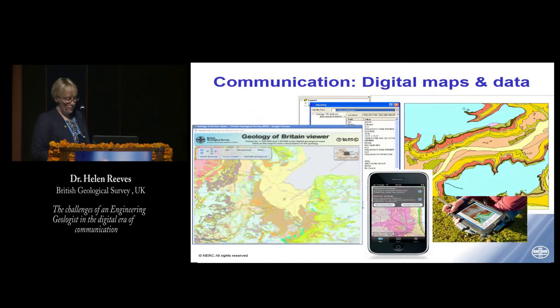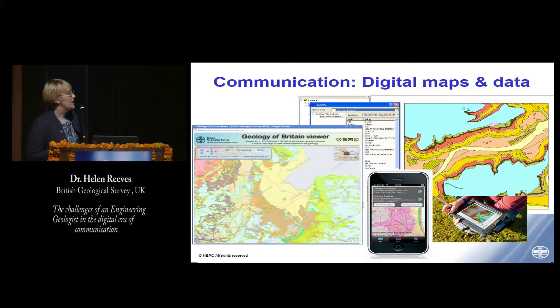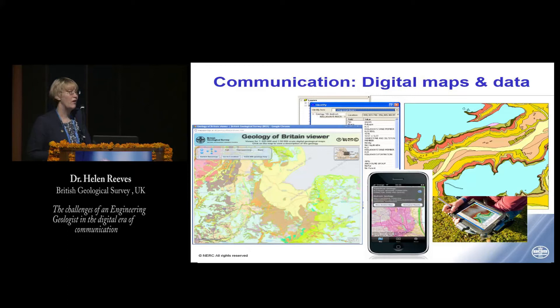More and more we're providing information in a digital format. We are manipulating digital data, providing digital geoscientific information — whether engineering geological, geotechnical, or environmental data — in geospatial information systems such as ArcGIS and MapInfo, and using that data to portray our information in a variety of ways, from ArcGIS shapefiles to web mapping services that provide geological information and maps. This is just one example from BGS — the Geology of Britain viewer — and also using web mapping services to create applications and apps for mobile phones and tablet laptops.